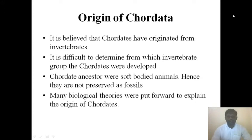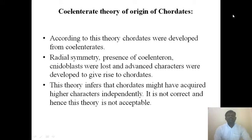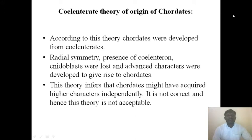The first theory is the Cylindrate theory of the origin of chordates. According to this theory, chordates were developed from the Cylindrata — an invertebrate phylum. The radial symmetry, presence of cnidarian characters, and nematoblasts were lost and advanced characters were developed to give rise to chordates. However, this theory infers that chordates might have acquired higher characters independently, so it is not considered acceptable.